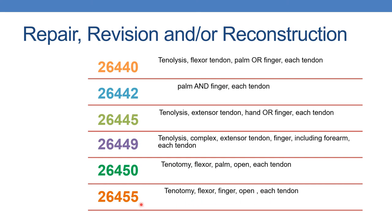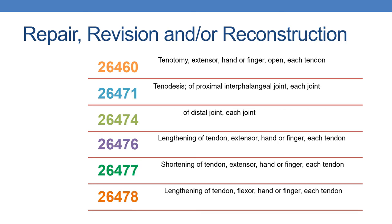Next is 26471: tenodesis, flexor, proximal interphalangeal joint, each joint. For distal joint, each joint, it is reported with 26474.